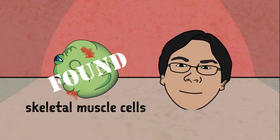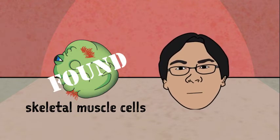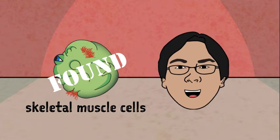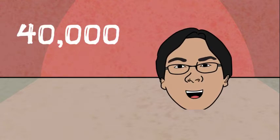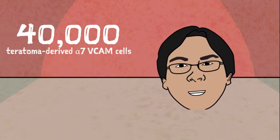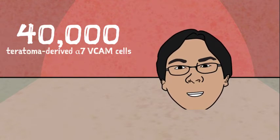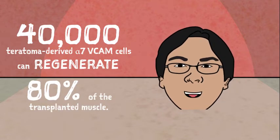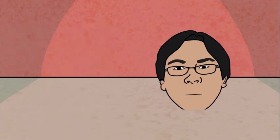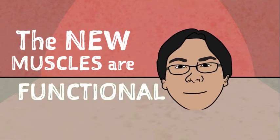But what makes these teratoma-derived cells so interesting is that they can actually form muscle fibers after transplantation. In fact, as few as 40,000 teratoma-derived alpha-7-VCAM cells, smaller than a grain of sand, can regenerate 80% of the transplanted muscle. And not only can they form muscles after transplantation, the new muscles are functional.